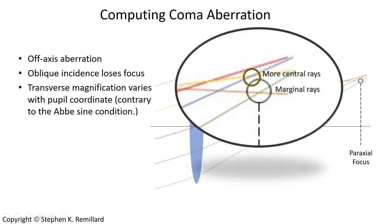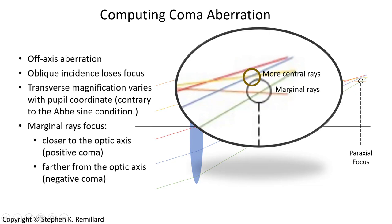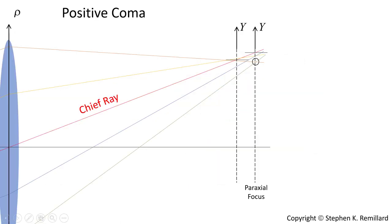Coma is often referred to as an Abbe sine condition breaker. Rays will converge at a different point depending on where on the pupil they fall — marginal rays converge in one place and more central rays in a different place. The chief ray defines the point of paraxial pierce. If the marginal rays focus closer to the optic axis, coma is positive; if they focus farther, it is negative coma.